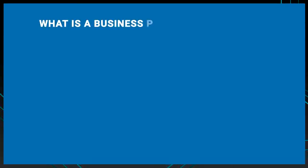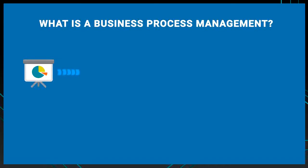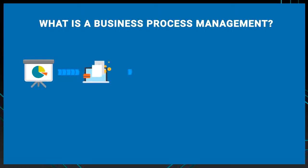What is business process management? Business process management is a set of activities that helps businesses to run more smoothly. These processes figure in all stages of the company's activities, from the starting stage to the final sales.